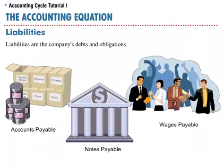Liabilities are claims against assets — that is, the company's debts and obligations. Campus Pizza's liabilities would include amounts owed to suppliers, called accounts payable; amounts owed to banks, called notes payable; and amounts owed to employees, called wages payable.